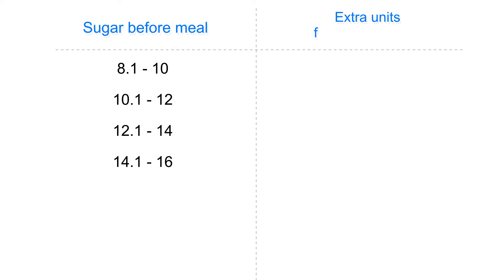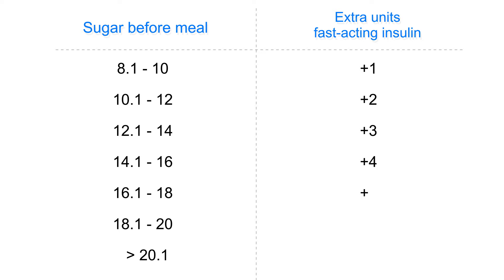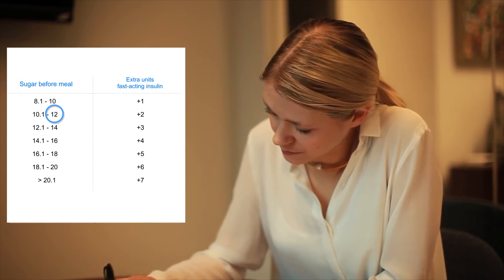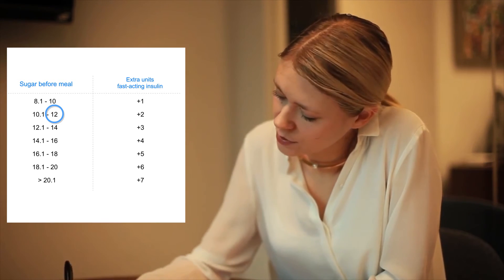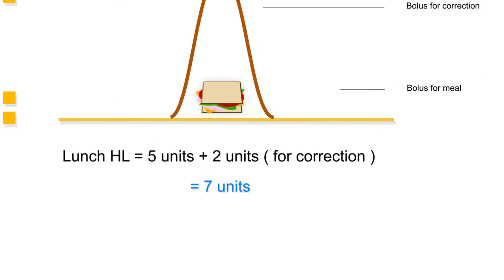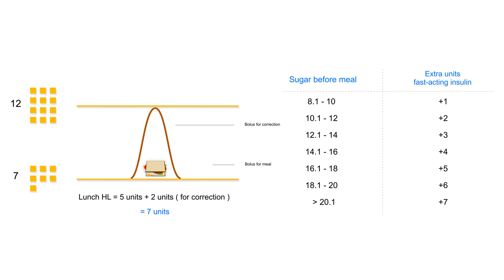This is an example of one of these correction scales that one of my patients uses. Every time they have a meal, they check their blood sugar before the meal and then look across to find out how much extra insulin to take if their blood sugar is elevated. So in our example, if your blood sugar was 12 — here's 12 — you would take two extra units to bring down the blood sugar plus the five that you would take for your meal, so you would take seven units total for that particular meal.